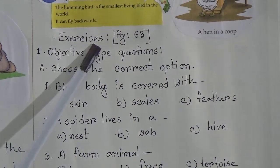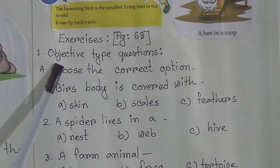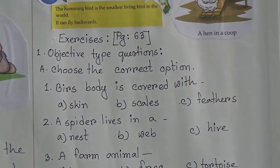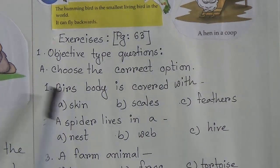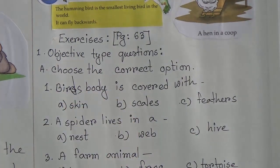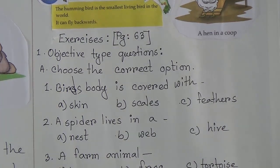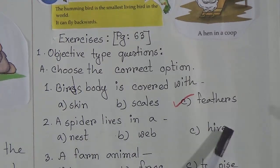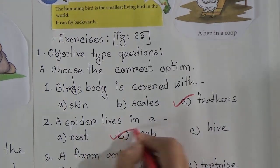Now we will solve some exercises from page 63 — the objective type question called 'Choose the Correct Option.' Our first question: a bird's body is covered with skin, scales, or feathers? The answer is feathers. Second question: the spider lives in a nest, web, or hive? The correct answer is web.